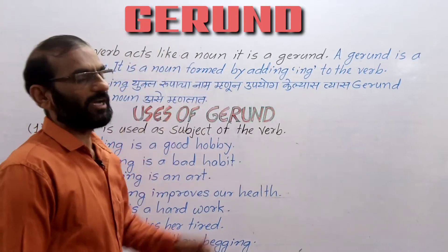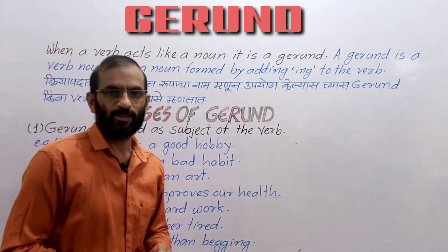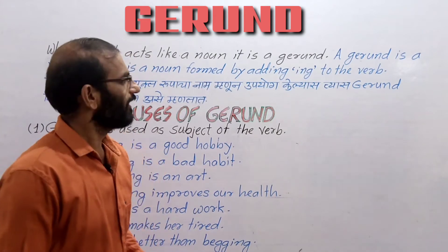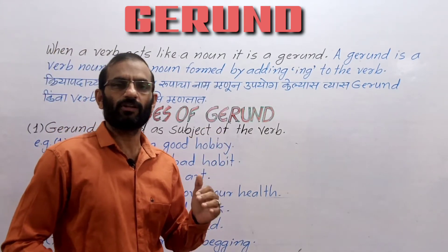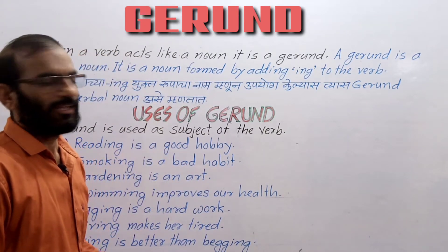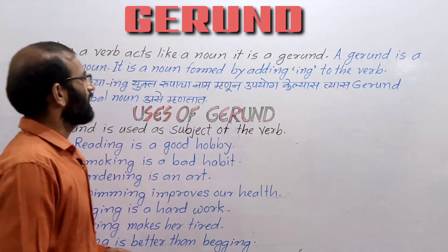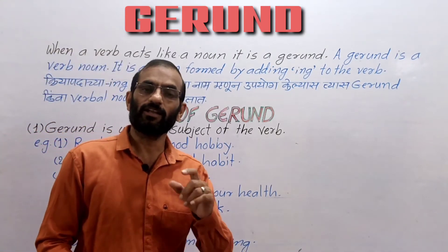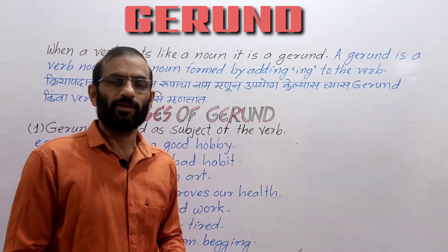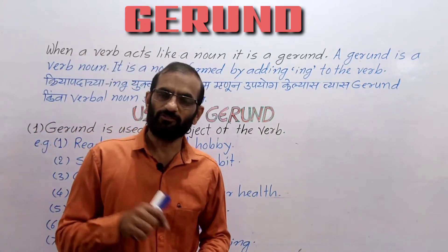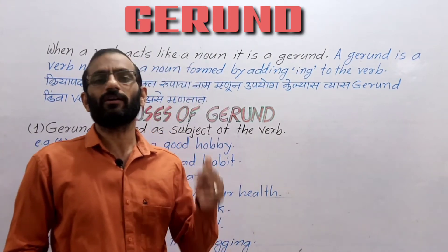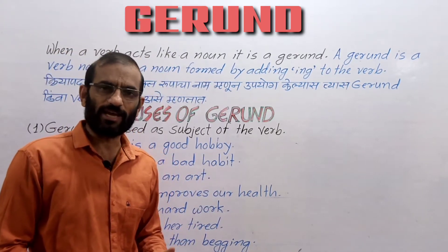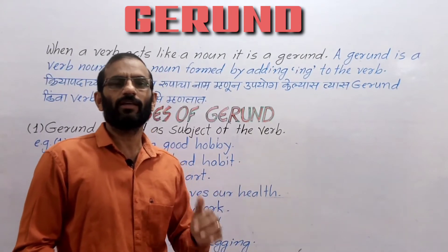Today we are going to learn the new chapter — gerund. Already we have seen the non-finite verbs, that is infinitive and participle. Now let us see the last part of non-finite verbs, that is gerund. What is a gerund? When V1 plus ING is used as an adjective it is called a participle, but the same form — V1 plus ING — when used as a noun, we call it a gerund.